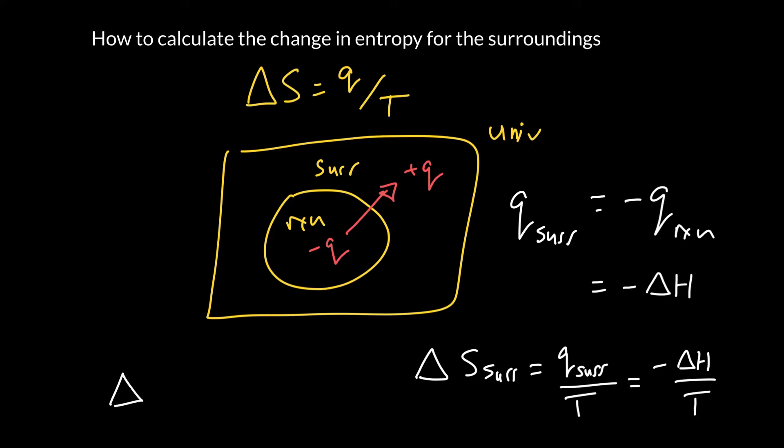So very important equation here. I'm going to rewrite this. So the change in entropy of the surroundings is equal to, under conditions of constant pressure, minus delta H for the reaction over T.